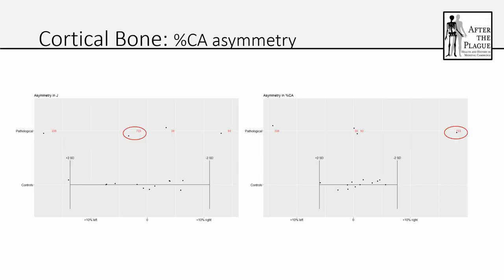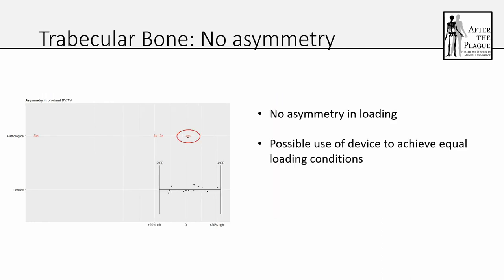When we looked at the cortical bone, the J values were completely normal — not at all what we anticipated. However, the relative cortical area is an outlier, which is really interesting, because relative cortical area offers insights into remodeling after the individual reaches peak bone mass in the late 20s to early 30s. The tibial plateau fracture would have occurred much earlier than this, in adolescence. When we looked at the trabecular bone, we also don't really see any asymmetry in loading, which is unusual — it suggests that during childhood and up to skeletal maturity he was loading his legs relatively evenly, which shouldn't be the case given the adolescent fracture.